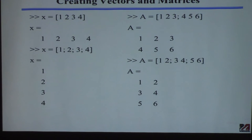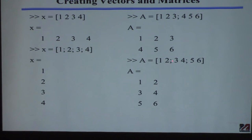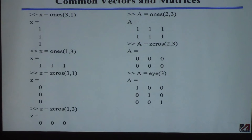You can also create a column vector by putting a prime right there. For a matrix, you separate rows with a semicolon. For example, creating matrix A with the first row as those two or three elements and the second row as those three elements. If you put the semicolon in a different place, you get a different matrix — in this case three rows and two columns.